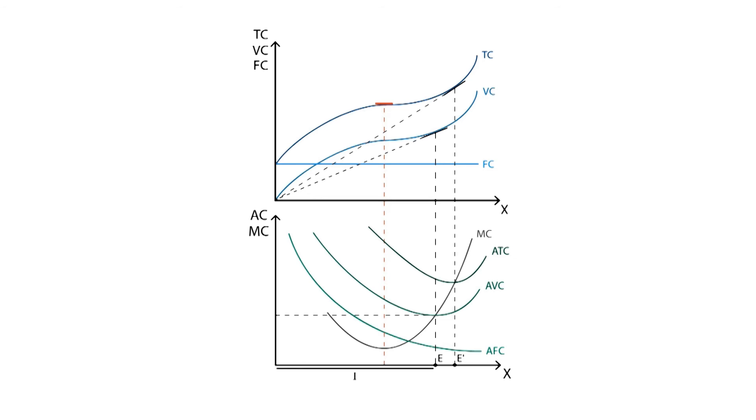Phase 1 corresponds to the part of the graph where average variable cost is still decreasing. During this phase, until the marginal cost is equal to average variable cost, the firm will be incurring great losses, equal to both its variable and fixed costs. Therefore, the firm won't be producing at all.